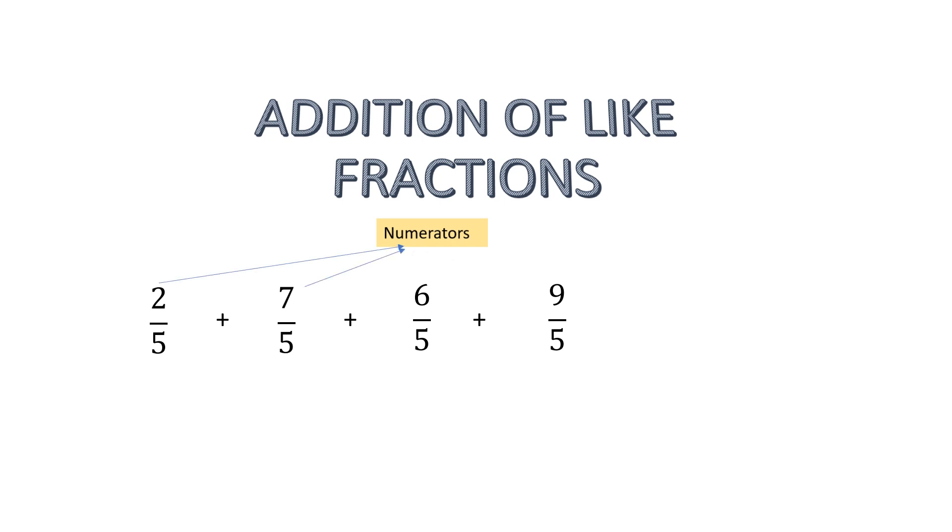So what to do? Take all the numerators and add them together: 2 plus 7 plus 6 plus 9. Everything will be in the numerator, and the denominator is 5. So if we do the addition, it becomes 24. Our answer becomes 24 by 5.